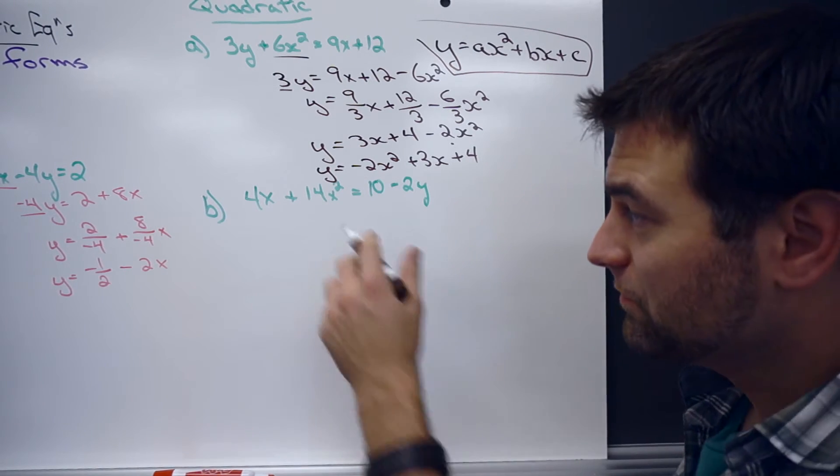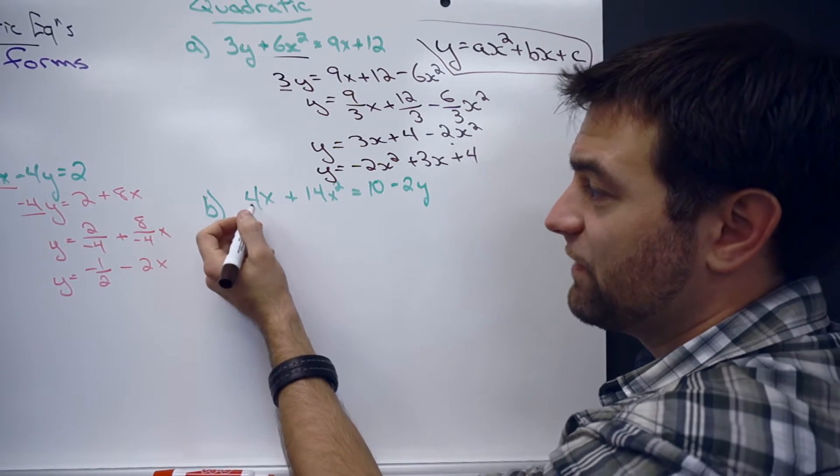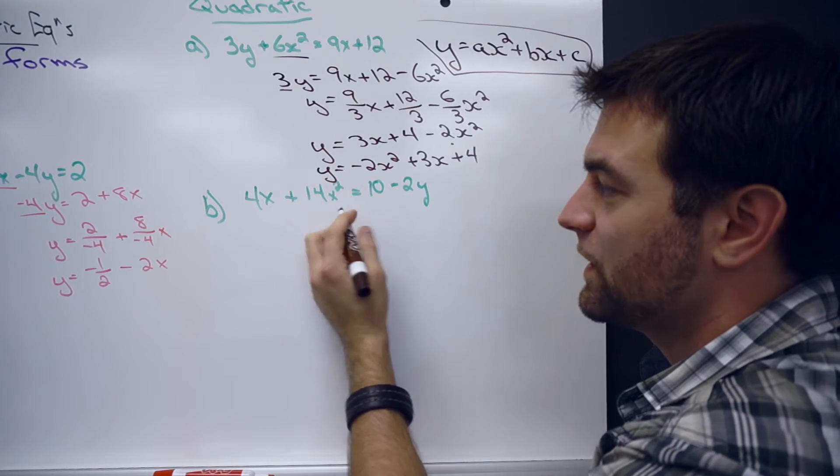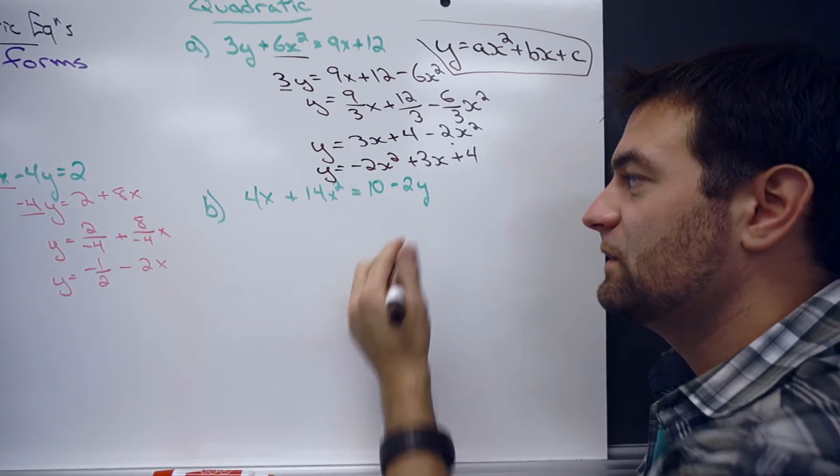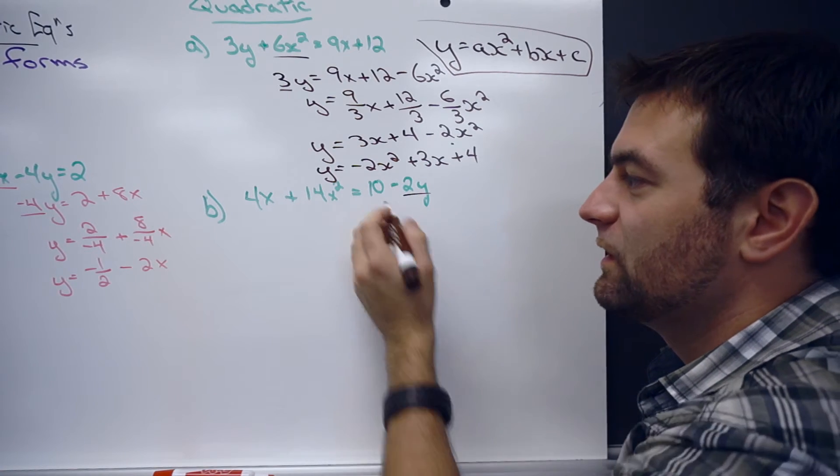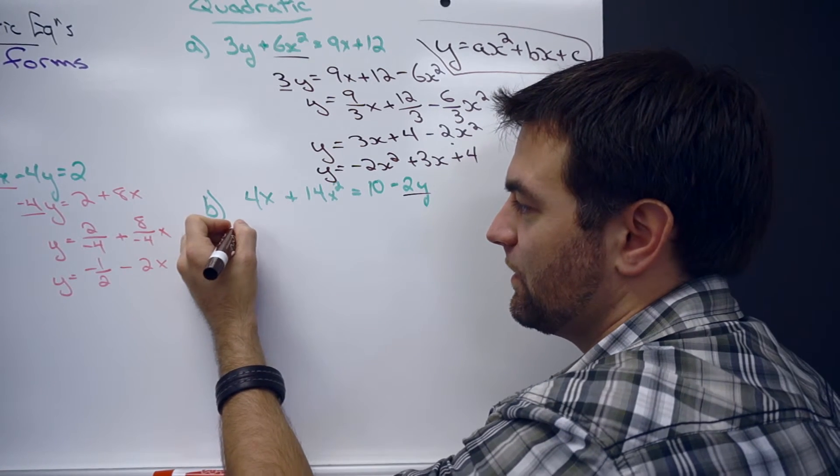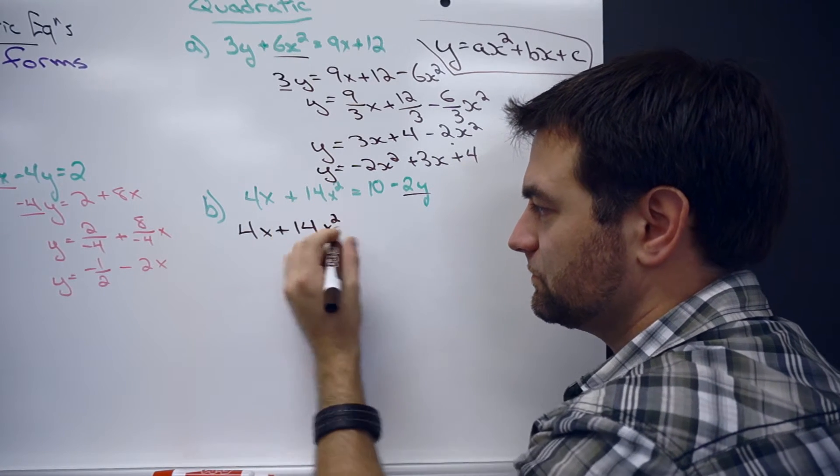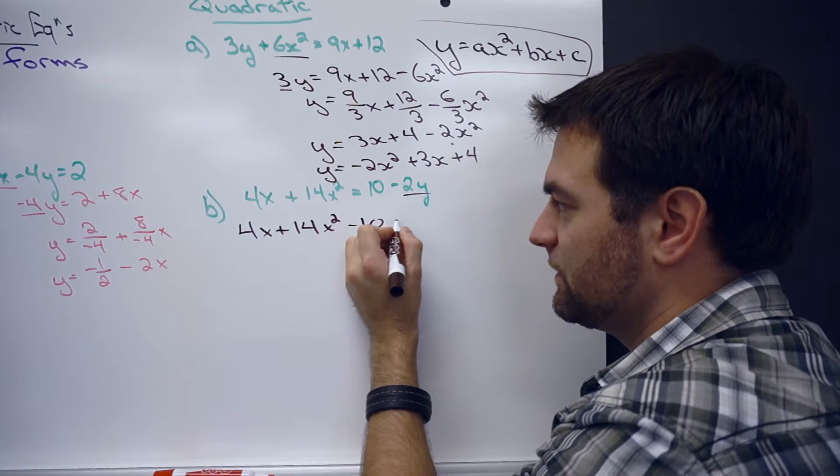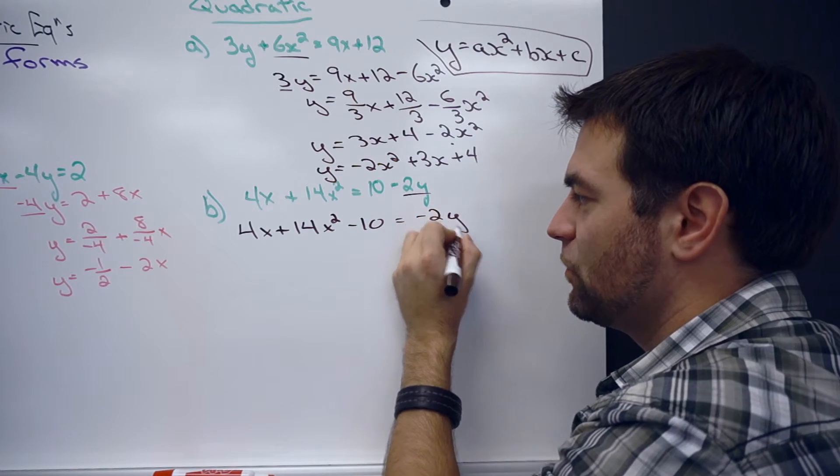One more example here. We have 4x plus 14x squared equals 10 minus 2y. So, again, looking to get this y by itself, let's move this 10 over. 4x plus 14x squared minus 10 equals negative 2y.